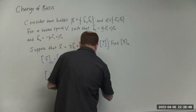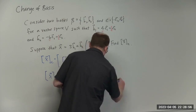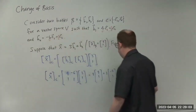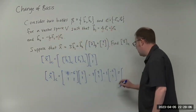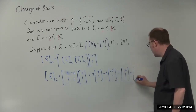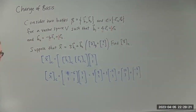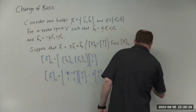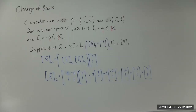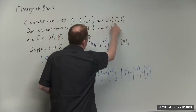So this means 3 times [4, 1] plus 1 times [−6, 1]. That gives us 3 times [4, 1] = [12, 3], and adding one times [−6, 1] = [−6, 1]. The result is [6, 4]. That is x in terms of our set C.